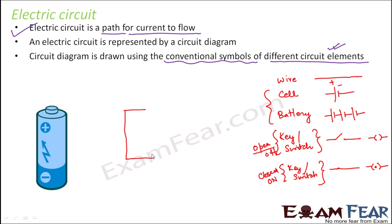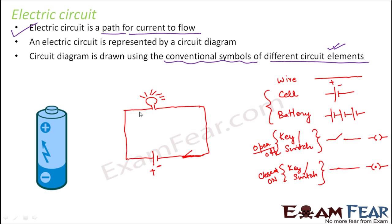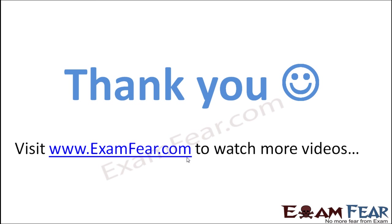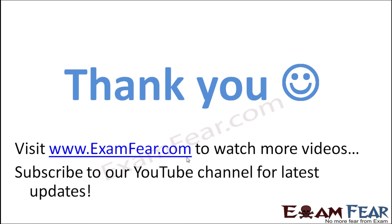The wires connect from a battery — a cell with a positive and negative terminal. You also have a key, and a bulb connected in the circuit. Right now the key is open, so the switch is off and the bulb is not glowing. As soon as you switch it on, the key closes and the bulb starts to glow. This is how we draw circuit diagrams. Please visit examfew.com to watch more educational videos. Don't forget to like and subscribe for latest updates.